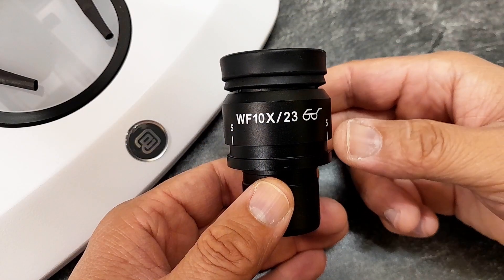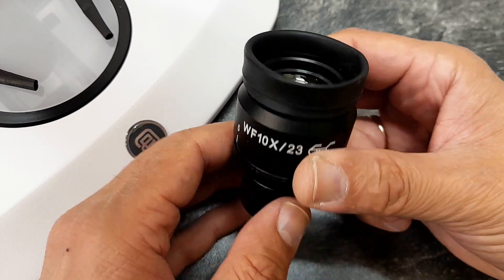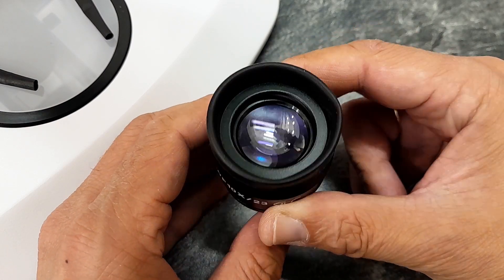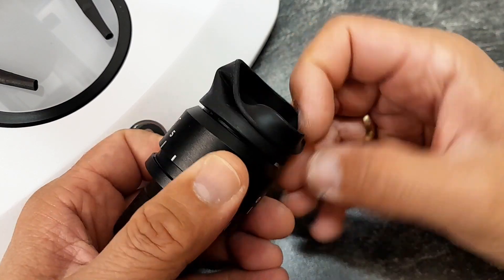Now let's have a closer look at the eyepieces. The field number is 23 and this means that you are able to see very much of the specimen at a given magnification. So these are wide field eyepieces.